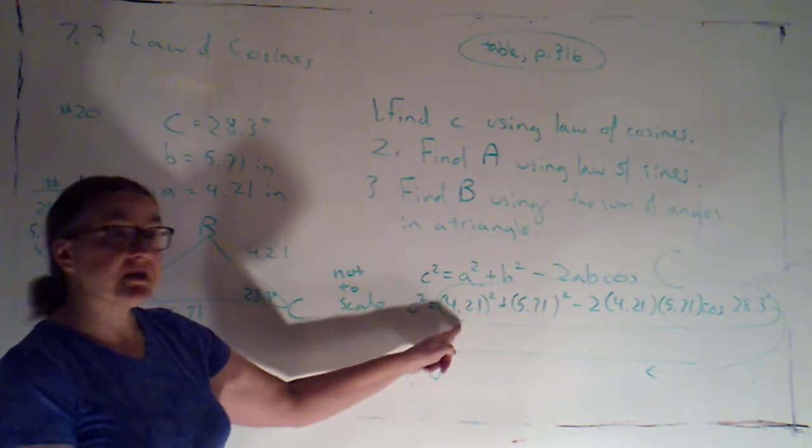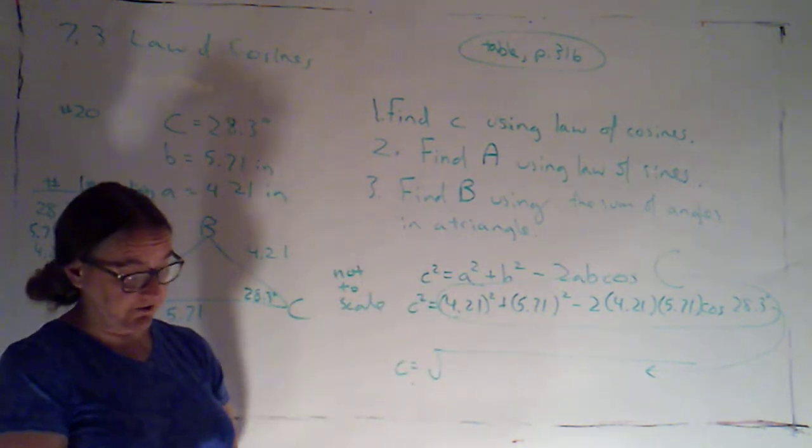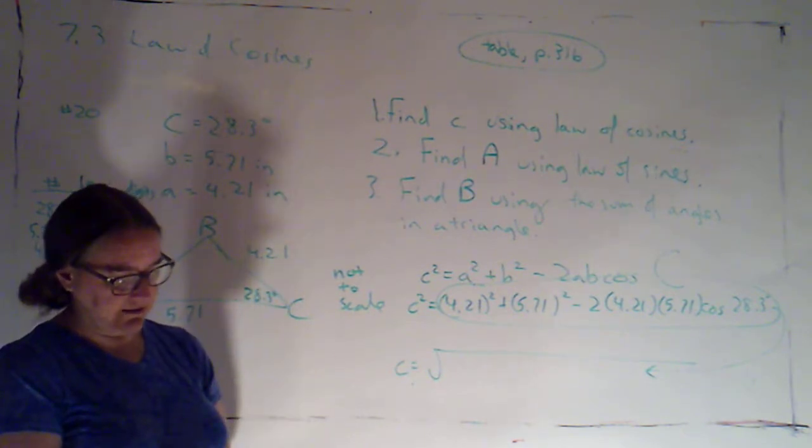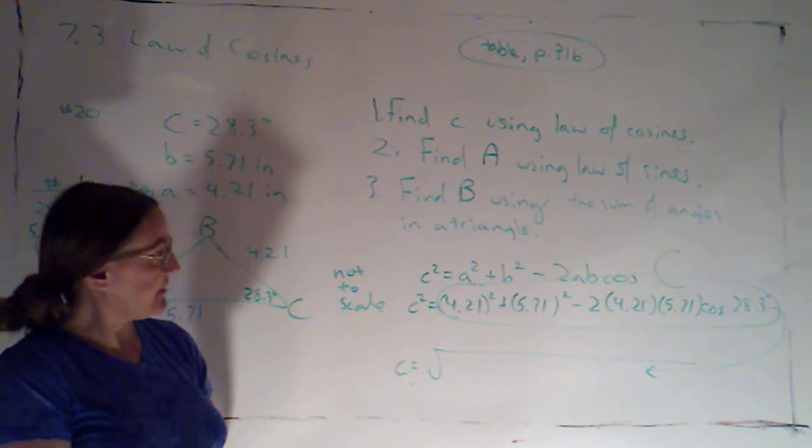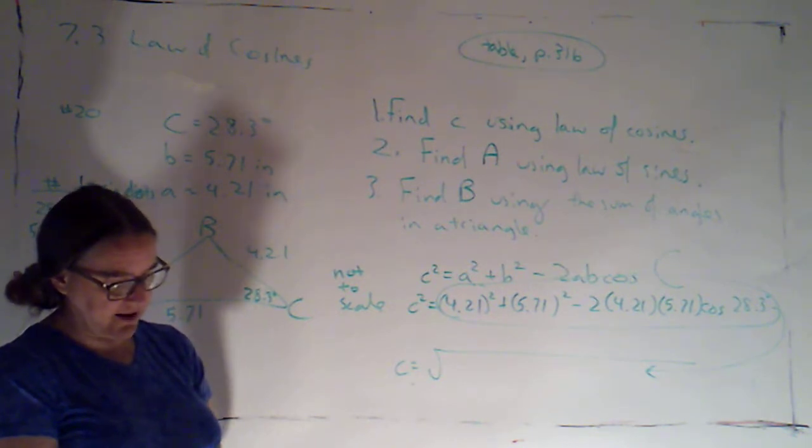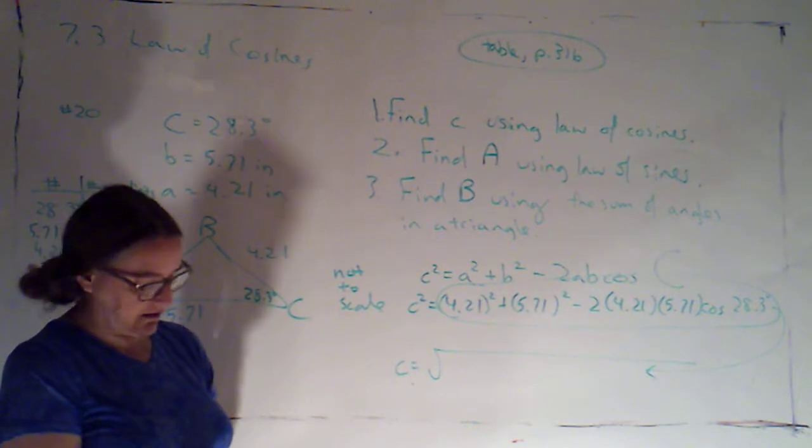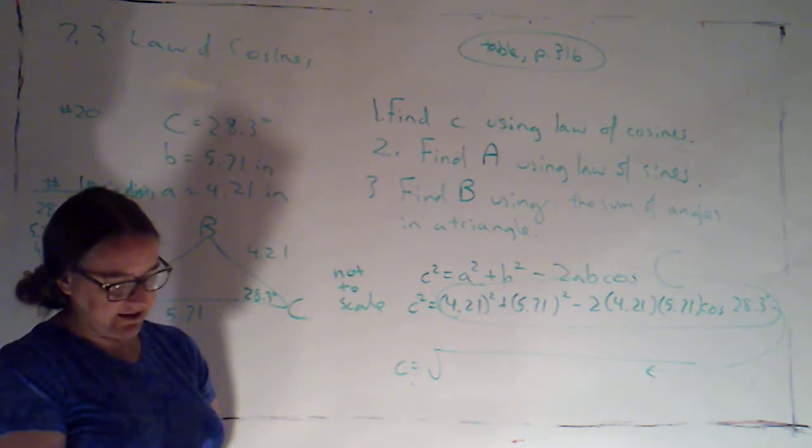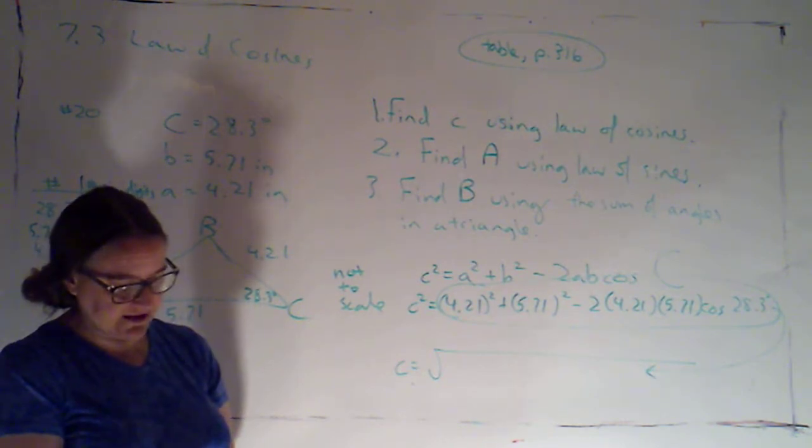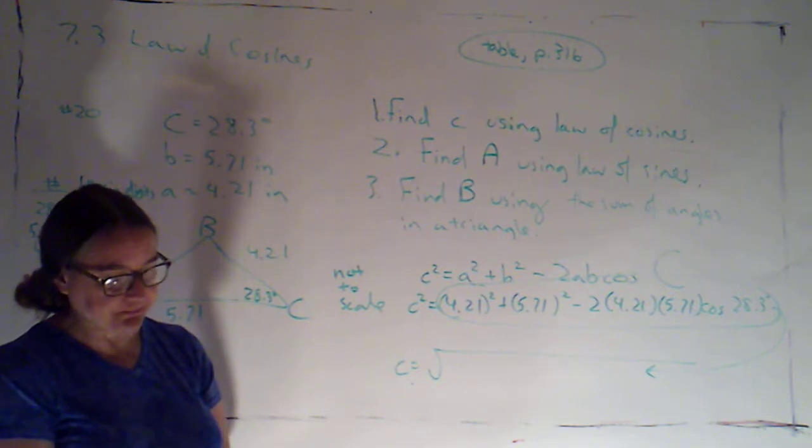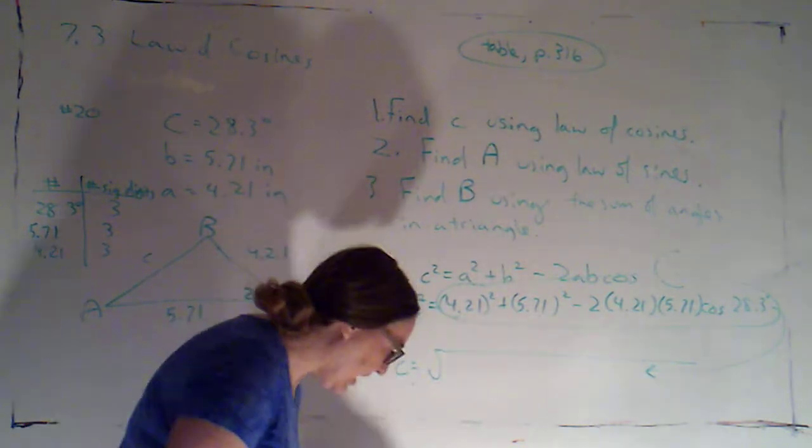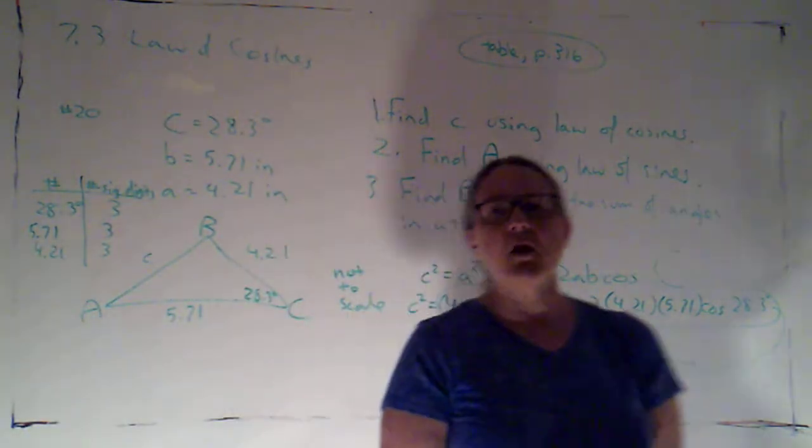I'm going to tell you how I'm going to enter it into my calculator, but all calculators are a little bit different, so you want to practice with the calculator that you're going to use for the calculator part of the final exam, so that you know what features you do and don't have. Alright, so I'm going to just calculate what c squared is first. So, I make sure I'm in degree mode, and then it's 4.21 squared plus 5.71 squared minus 2 times 4.21 times 5.71 times cosine of 28.3. Okay, so I get 7.996 blah blah blah.